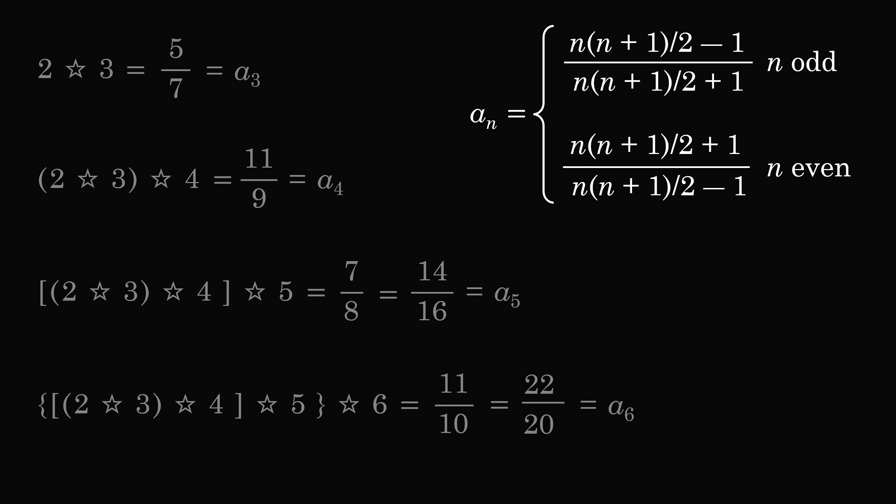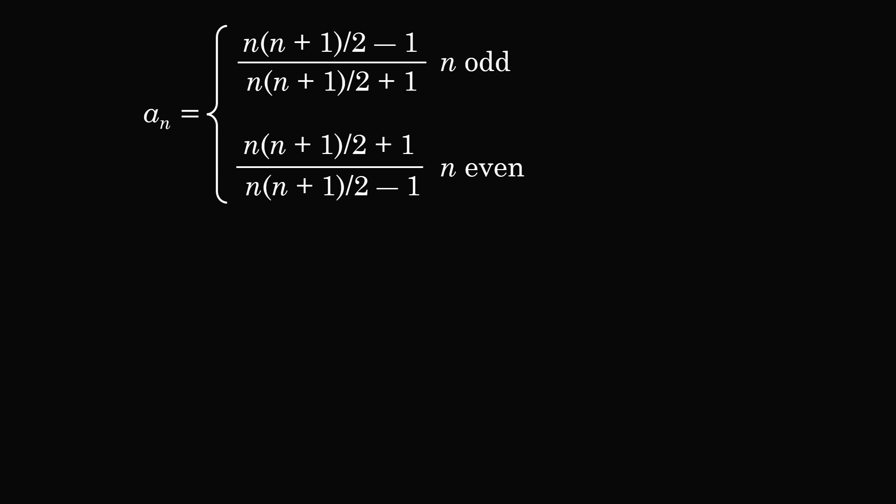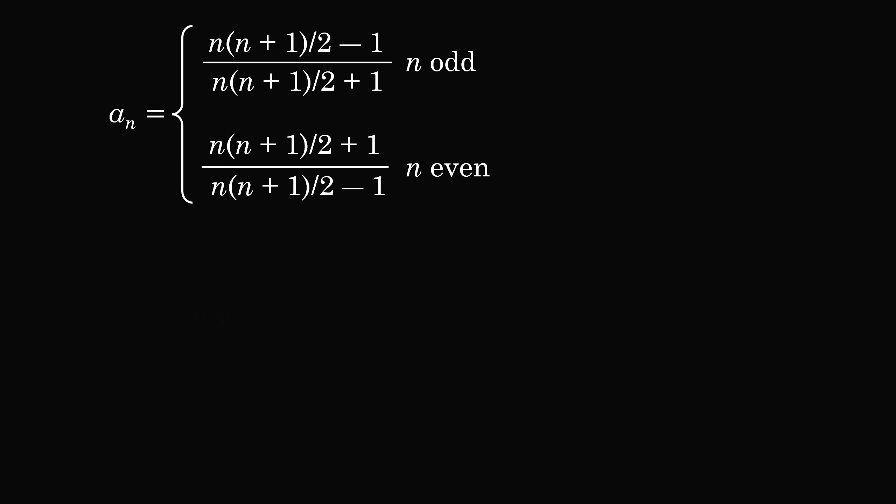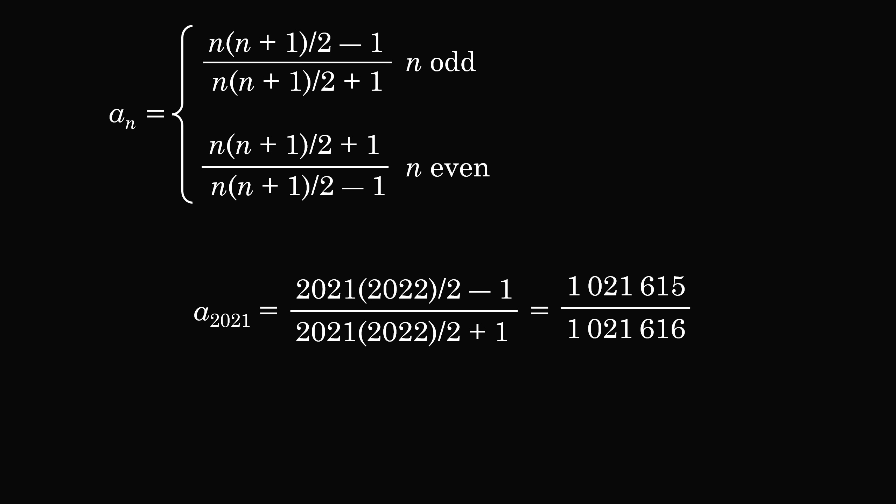So assuming this is true, what would a of 2021 be equal to? We can substitute in and then we can simplify. The fraction will be equal to 1,021,615 divided by 1,021,616. And that's the answer.